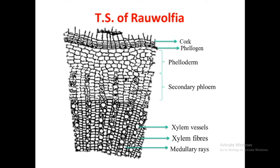In cinnamon, stone cells are present, which is an important microscopic identification characteristic of cinnamon bark. But in cinchona bark, stone cells are absent, and in Rauwolfia also, stone cells are absent. Stone cells are present in kurchi bark and cinnamon bark, but absent in Rauwolfia root and cinchona bark.